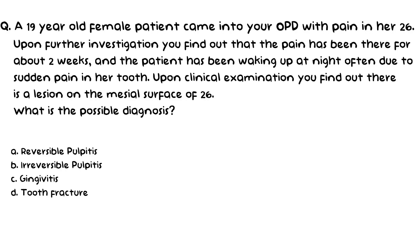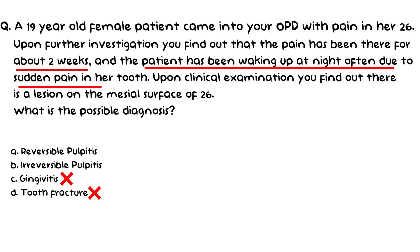Based on the information provided, there are 2 options most likely correct: irreversible pulpitis or reversible pulpitis. Gingivitis and tooth fracture are both incorrect as the symptoms don't match either. Reversible pulpitis is more of an acute condition, so a patient would present with pain for only a couple of days — but here the pain has been present for 2 weeks. Additionally, pain of reversible pulpitis is never spontaneous; it occurs only with external stimuli like mastication. Here, the patient experiences spontaneous pain with no external stimulus, occurring at night when not chewing. Based on these 2 findings, irreversible pulpitis is the most likely diagnosis.